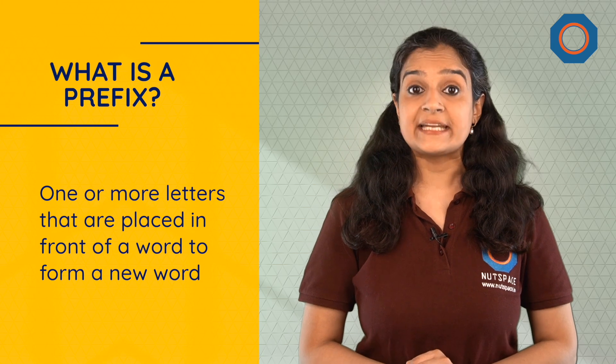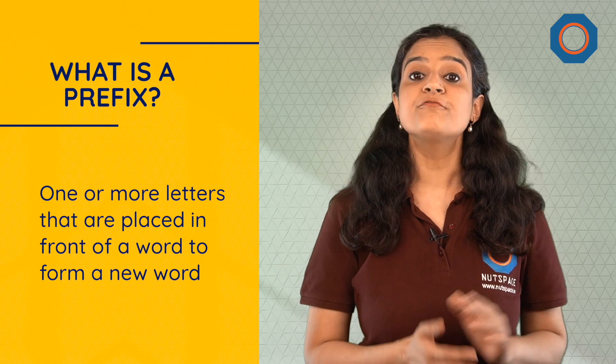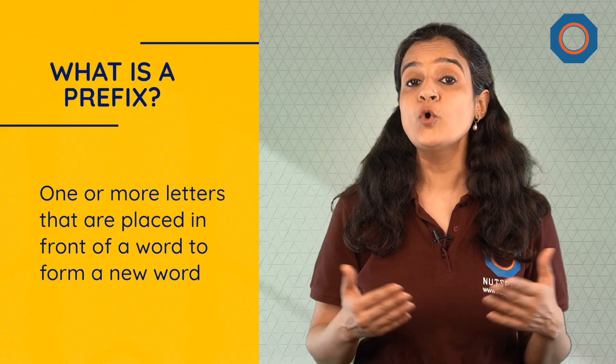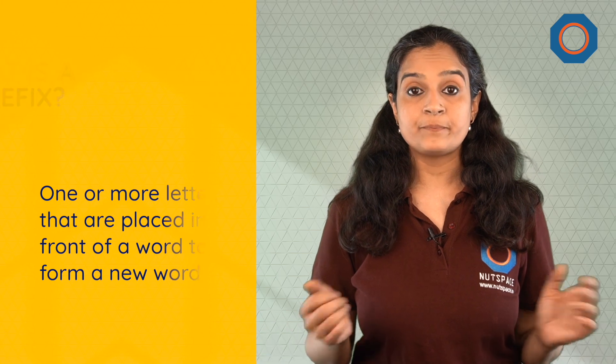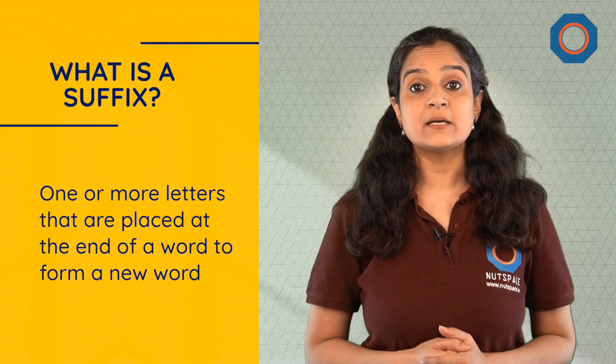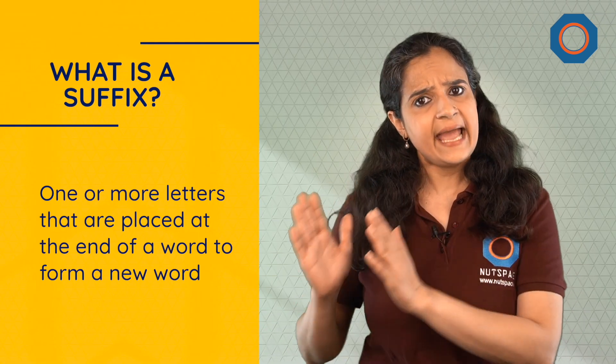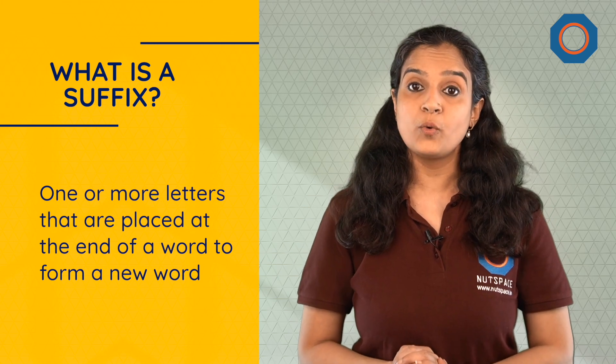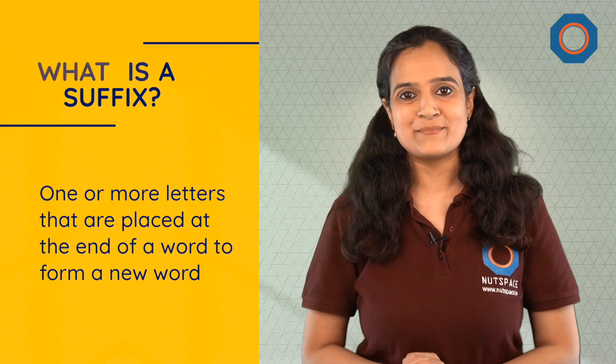A prefix is one or more letters that are placed in front of a word to form a new word with a similar meaning. A suffix is one or more letters that are placed at the end of a word to form a new word with a similar meaning. And a root word is the base word which is combined with a suffix or a prefix to form a new word.